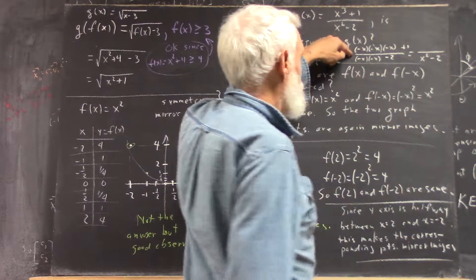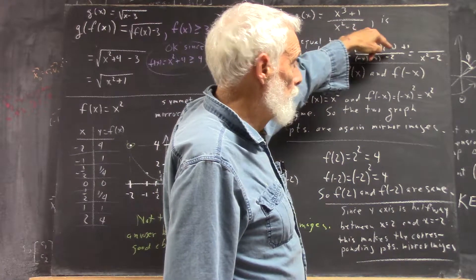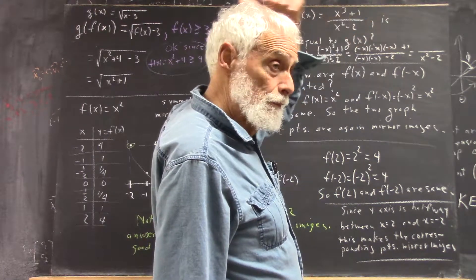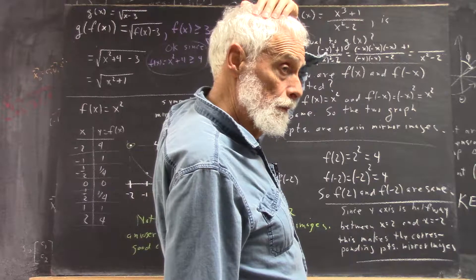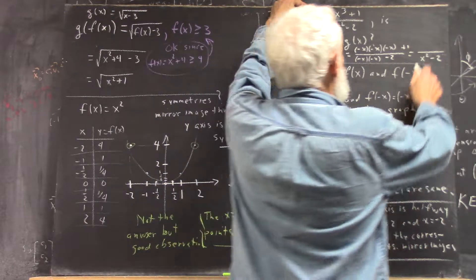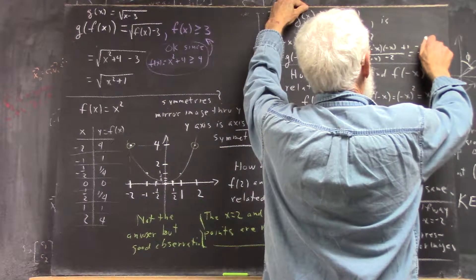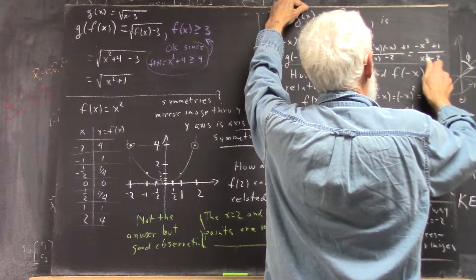And in the numerator, what do you get if you multiply negative x by negative x by negative x? Negative three, negative x to the third.